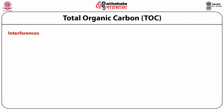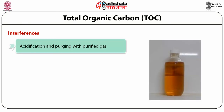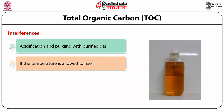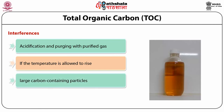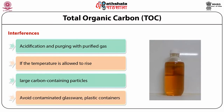The major interferences in TOC determination include removal of carbonates and bicarbonates by acidification and purging, which can result in loss of volatile organic substances. Volatile losses can also occur during sample blending if the temperature is allowed to rise. Another important loss occurs if large carbon-containing particles fail to enter the injection needle. To minimize these, avoid contaminated glassware, plastic containers, and rubber tubing, and analyze a reagent blank following the same treatment procedure as the wastewater sample.